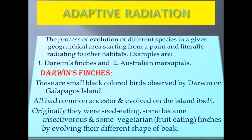Darwin's finches are small black colored birds observed by Darwin on the Galapagos Island. All birds had a common ancestor and evolved on the island itself. Originally they were seed-eating, but some became insect-eating (insectivorous) and some others became vegetarian, i.e. fruit-eating finches, by evolving different shapes of beak.